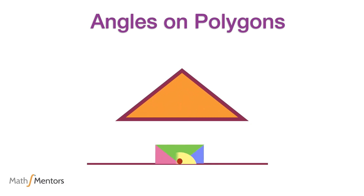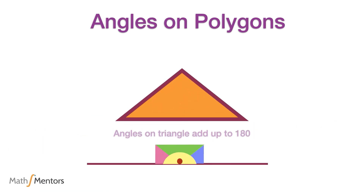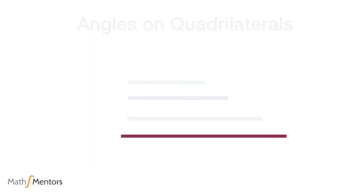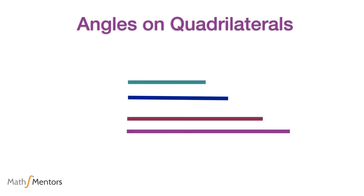The interior angles on a triangle add up to 180 degrees. Similarly, we can make polygons with four straight lines.